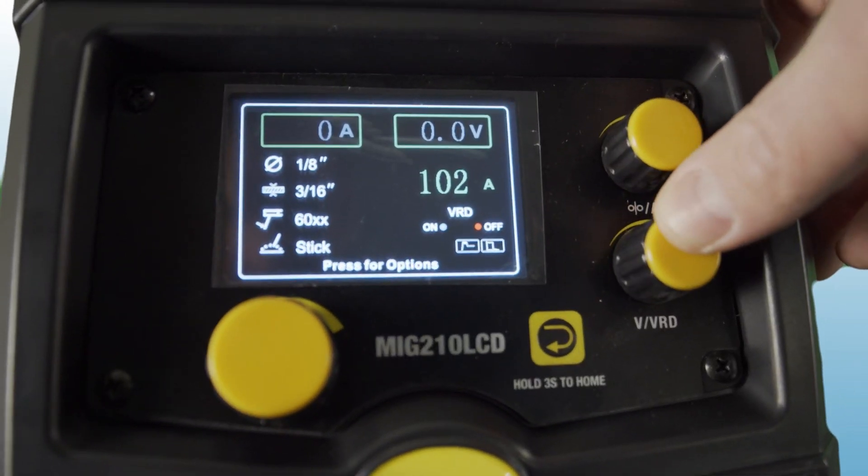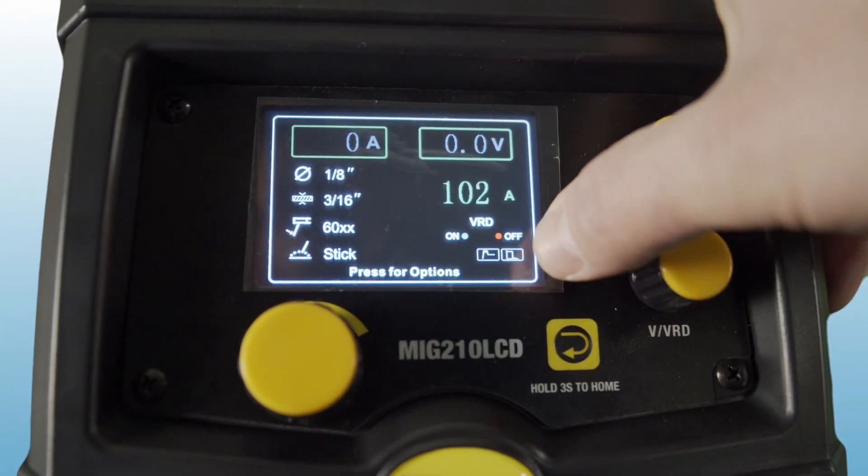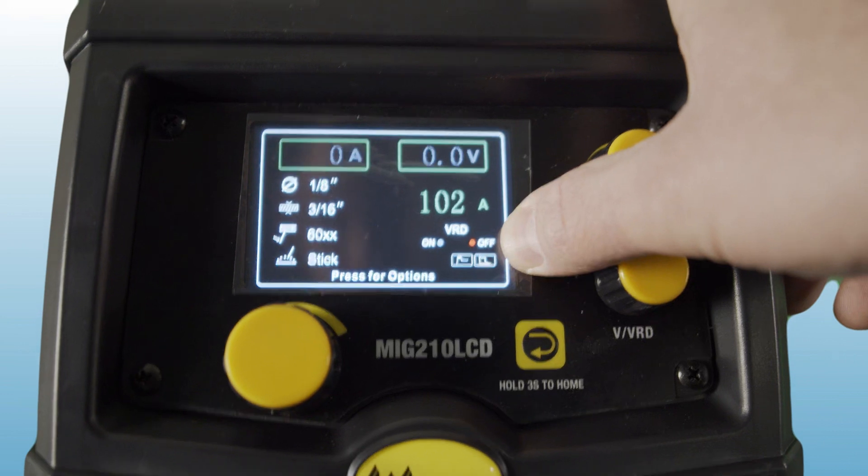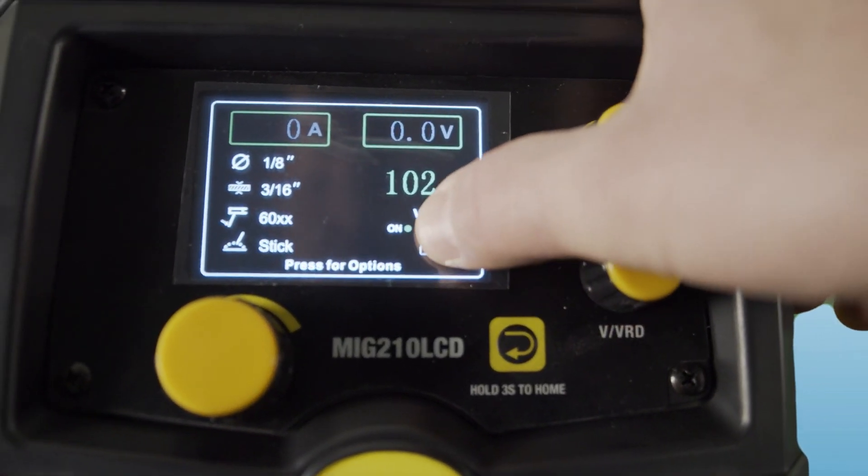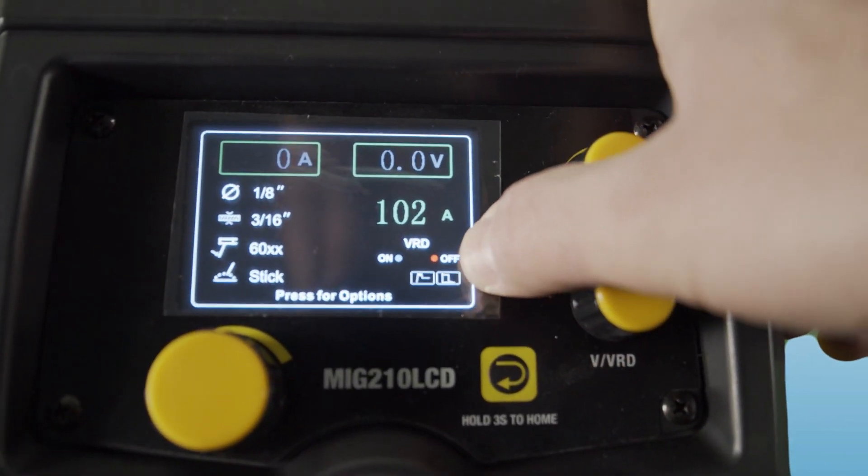The MIG 210 LCD is equipped with something called VRD. This is a safety feature that can help reduce open circuit voltage. Sometimes disabling VRD can help with hotter arc starting.